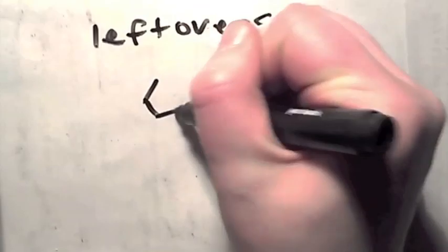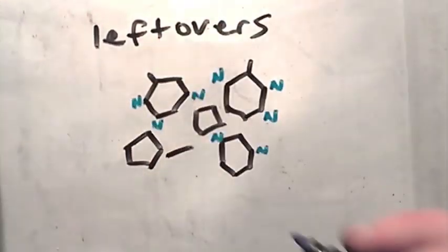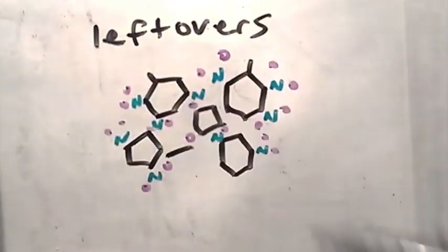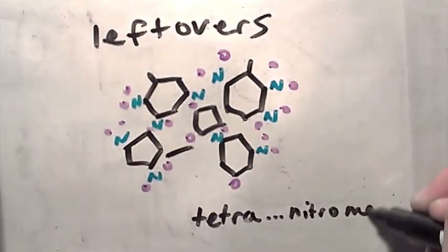Of course, we also have a lot of this other stuff lying around left over from the reaction. Things like asymmetric and less stable isomers of TNT, and oxidized products and other weird stuff like tetranitromethane.